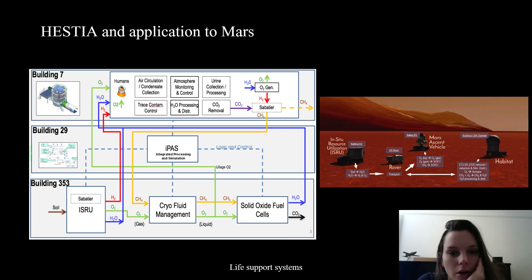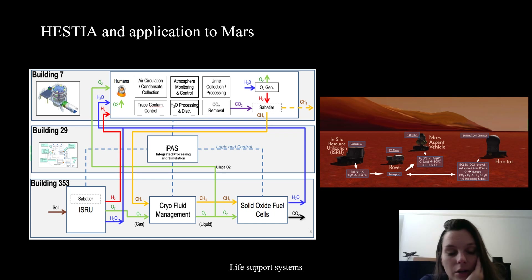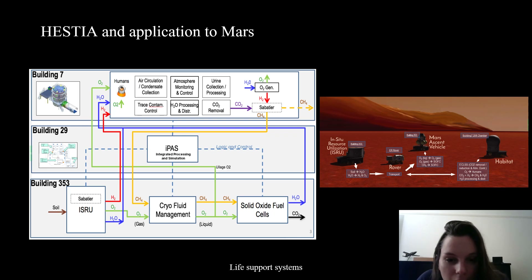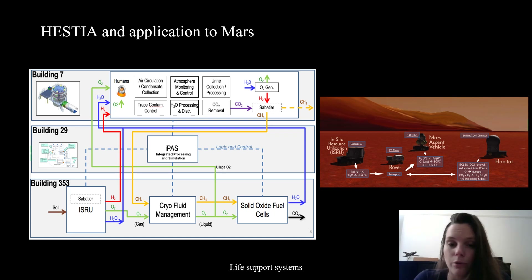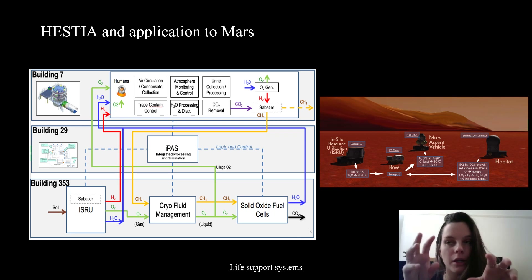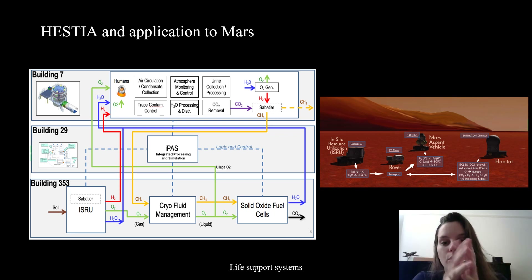You can also see the application of Hestia onto Mars - how they would split into several different buildings. One would be focused on astronauts and spacesuits, another on the habitat, and another on rovers. You can see cooling systems, and how oxygen and CH4 can be used for solid oxide fuel cells, which basically use these products to produce energy for rovers and spacesuits. It's a really nice way to start closing the loop toward long-duration remote space exploration.